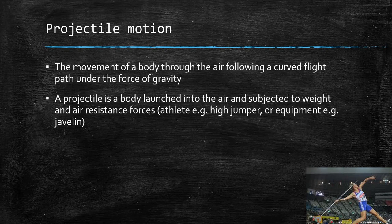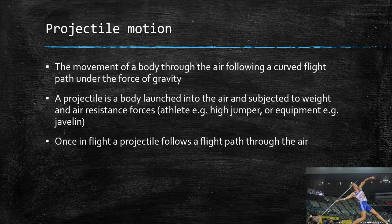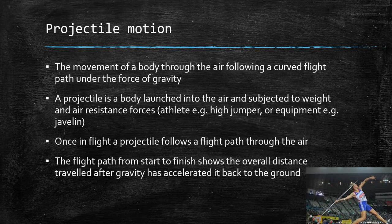A projectile is a body that is launched into the air and it's subjected to weight and air resistance forces. For example, you can have an athlete like a high jumper, or you can have equipment like a javelin, a shot put, or a discus. Once in flight a projectile will follow a flight path through the air. The flight path from start to finish will show the overall distance travelled after gravity has accelerated it back to ground.